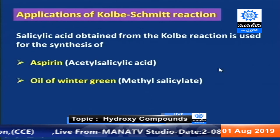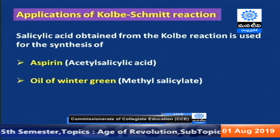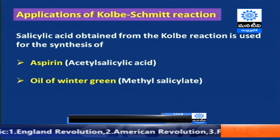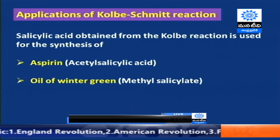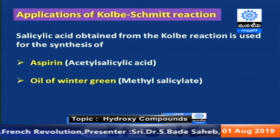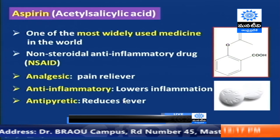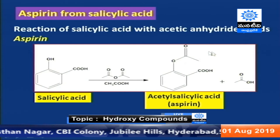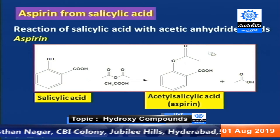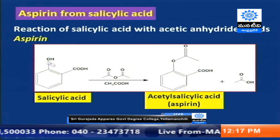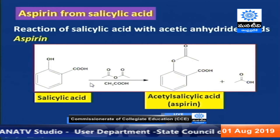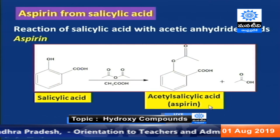Two important compounds can be derived from salicylic acid. The first is aspirin, also known as acetylsalicylic acid — one of the most widely used medicines in the world. It is used as an analgesic to relieve pain, as an anti-inflammatory drug, and as an antipyretic. We obtain aspirin from salicylic acid by acylation of the hydroxyl group: adding acetic anhydride in acetic acid medium converts the hydroxyl group to form acetylsalicylic acid.